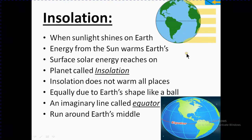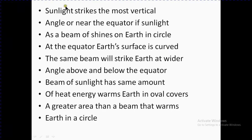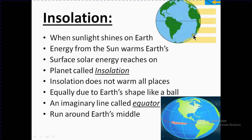If sunlight, as a beam, shines on Earth in a circle at the equator, Earth's surface is curved. The same beam will strike Earth at a wider angle above and below the equator. You can see here at the equator, if the rays or sunlight comes up and down, above and below, they make a wider angle.